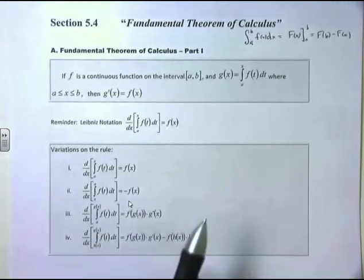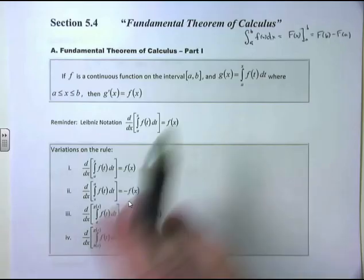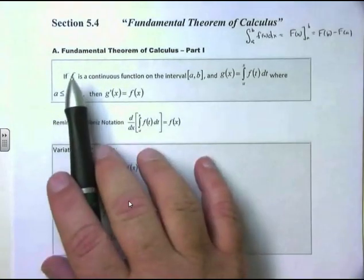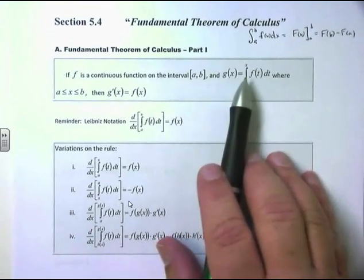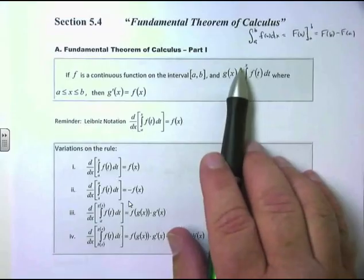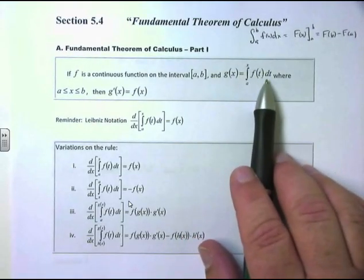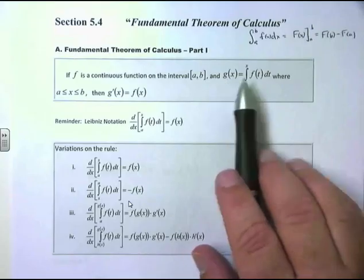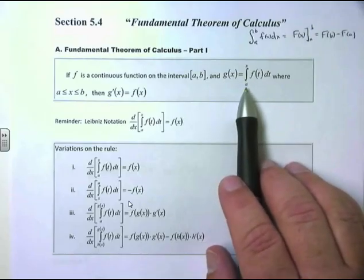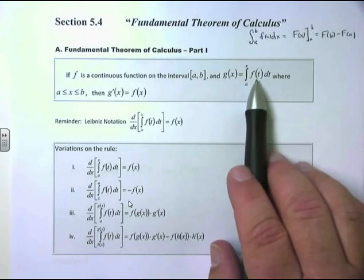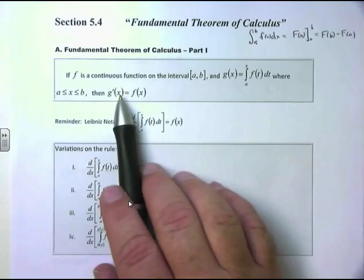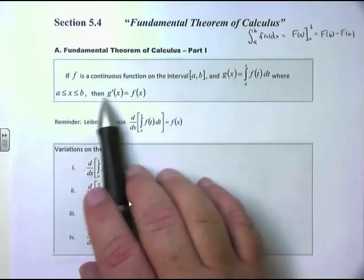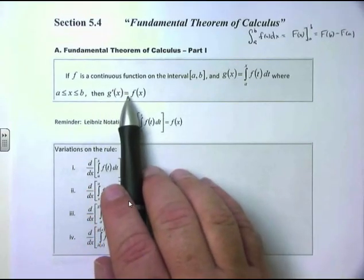We are actually focusing on the other Fundamental Theorem of Calculus, the Part 1 version. That is still dealing with integrals. If f is a continuous function on the interval between A and B, and g(x) is the integral from A to x of some function f(t)dt — where A is less than x, which is less than or equal to B — then g'(x) will be equal to f(x).